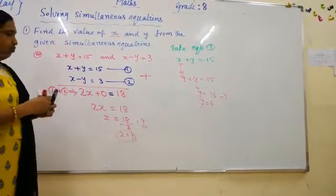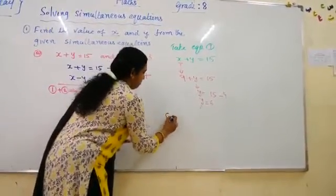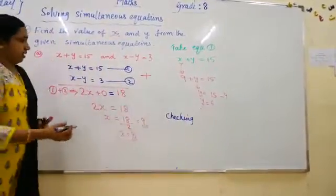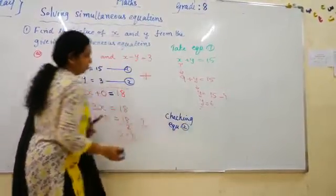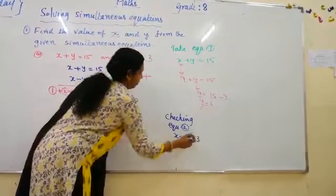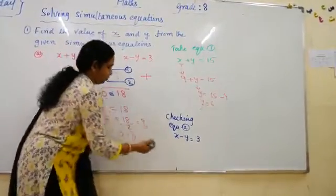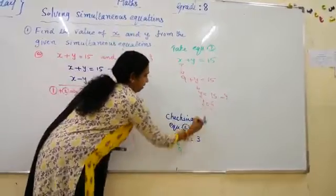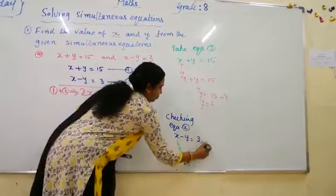So for checking, you want to know if it is correct or wrong. Take the second equation, equation number 2. x minus y is equal to 3. We have the x value, x is 9 and y is equal to 6. 9 minus 6 is equal to 3. So we are correct.